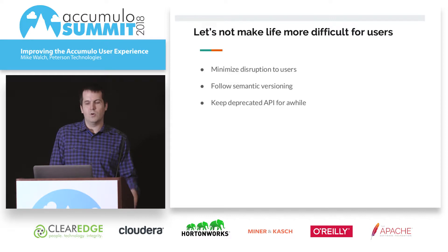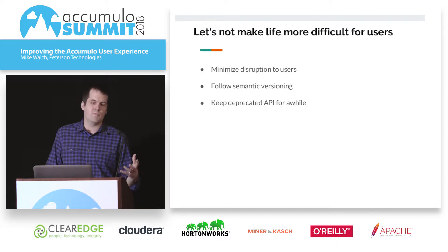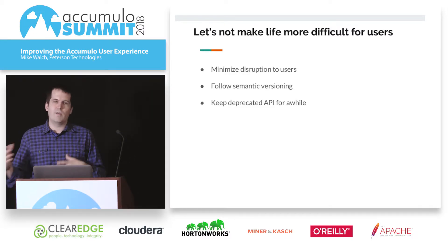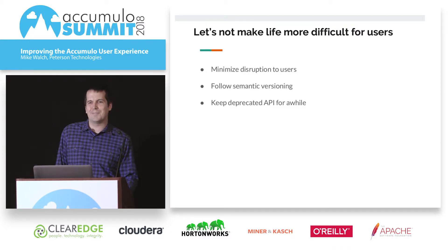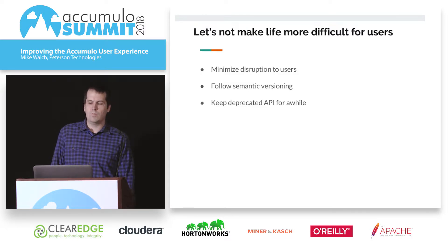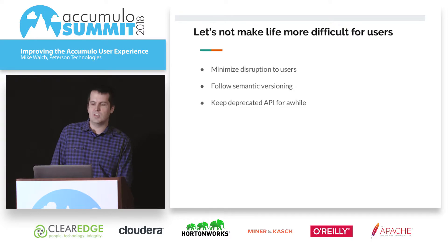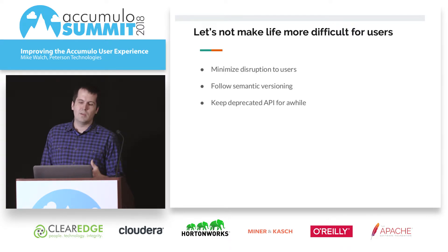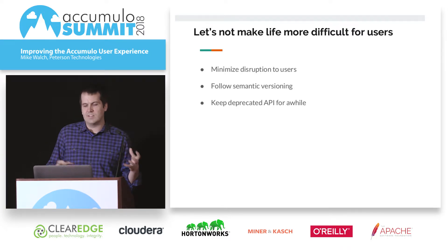When we simplify Accumulo, we don't want to make life difficult for users. We don't want them to have to change their code for every minor release just because we're making it better. So we're following semantic versioning, which tells you when things might break. We're trying to minimize disruption — not just dropping deprecated API immediately, giving you time to make changes. Accumulo is going to improve, simplify, and get better, but it won't be a drastic change for users, and hopefully we actually make life easier for them.